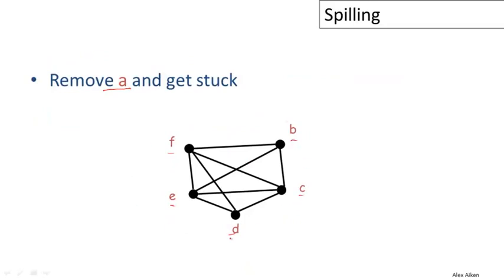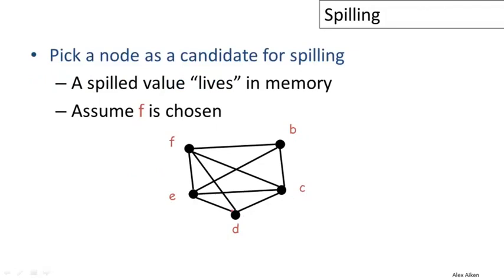There's no node that we can delete from the graph and be guaranteed to be able to find a coloring for it with the heuristic that we discussed in the previous video.